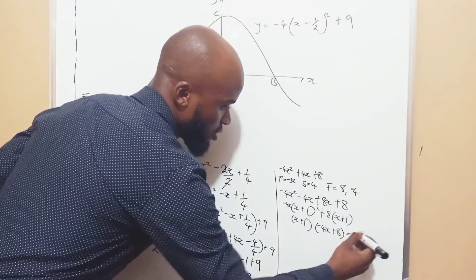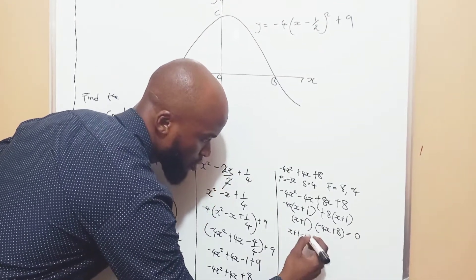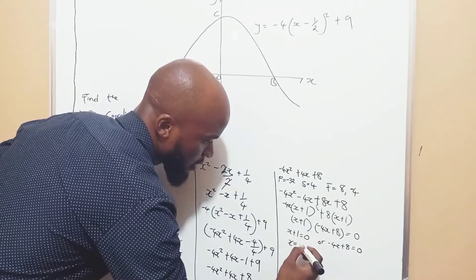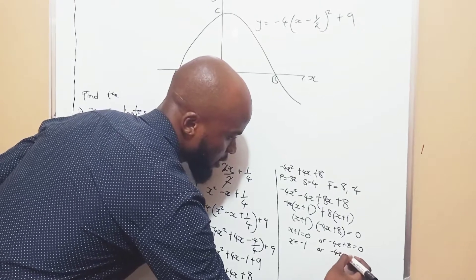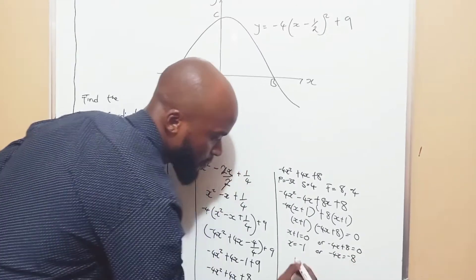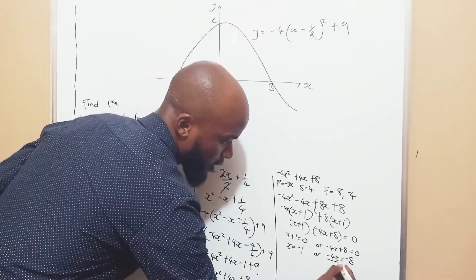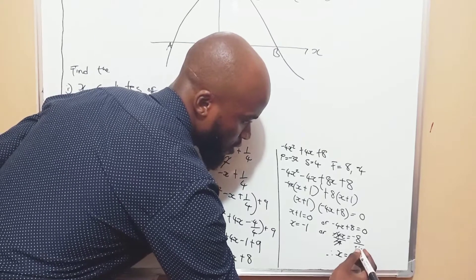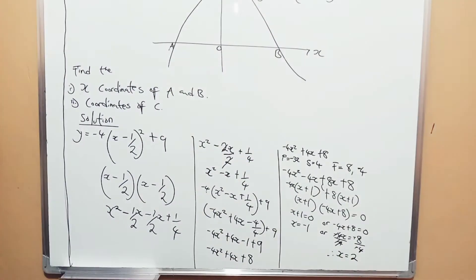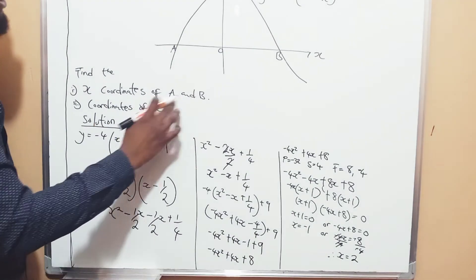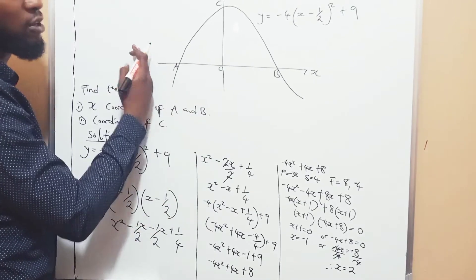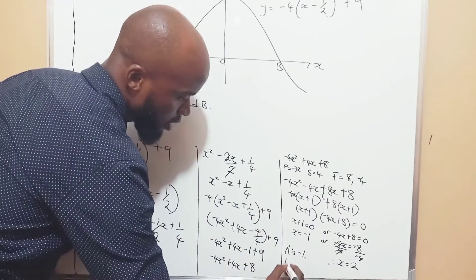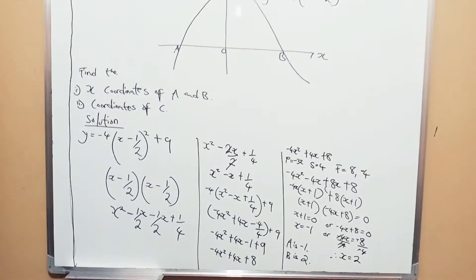We want to find the x-values of a and b, so we equate to 0. We have x plus 1 equals 0, or negative 4x plus 8 equals 0. So x equals negative 1. Or negative 4x equals negative 8, so x equals negative 8 over negative 4, which is positive 2. So a is at the negative side: a is negative 1. And b is at the positive side: b is 2.